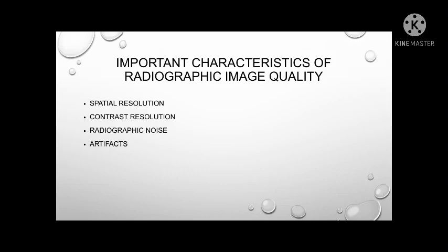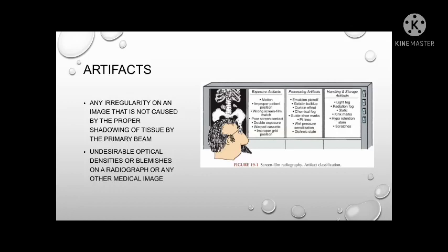Radiographic noise is also an important characteristic for image quality. Factors that affect radiographic noise include screen speed and the construction of the intensifying screen and radiographic film. And lastly, we have the artifact — this is what we'll be discussing for radiographic film analysis. There are three classifications for artifacts in screen film radiography: exposure artifacts, processing and handling artifacts, and storage artifacts.